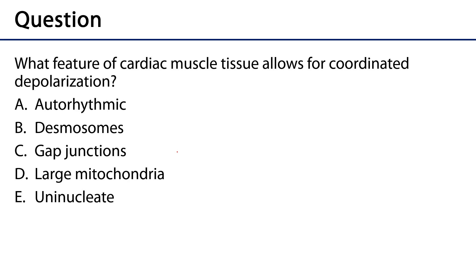The assessment question for this video: what feature of cardiac muscle tissue allows for coordinated depolarization? Is it auto-rhythmicity, desmosomes, gap junctions, large mitochondria, or that the cells are uninucleate? The correct answer is gap junctions. Gap junctions allow cardiac myocytes to function as one large functional syncytium. The other options are all true of cardiac muscle tissue but do not necessarily allow for coordinated depolarization. Thank you very much for your time.